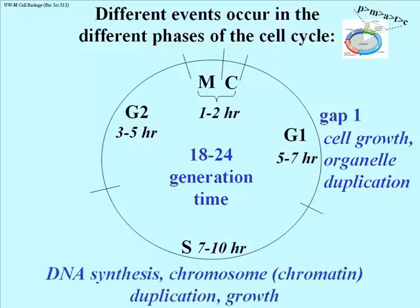The S phase is the period of DNA synthesis — the time during which chromosomes or chromatin is actually duplicated. This means not only is DNA doubled, but you also have to double the number of histones and the number of non-histone proteins that previously covered essentially half of the chromatin.